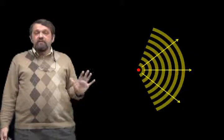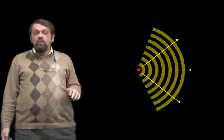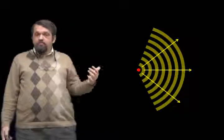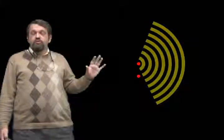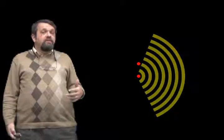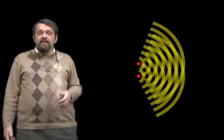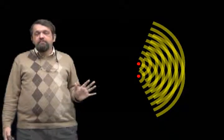But suppose we have more than one source. From the first source, the upper source, the waves spread out like this. From the lower source, the waves spread out like this. And so the waves of the pair of sources will be the sum of these two wave functions, which we can represent like this. And you see, this is a fairly complicated pattern.